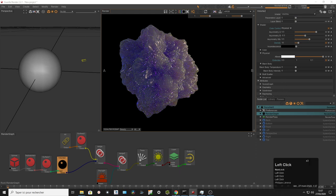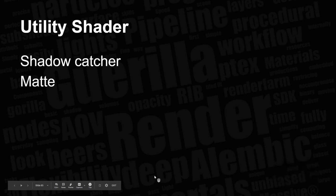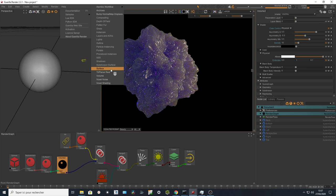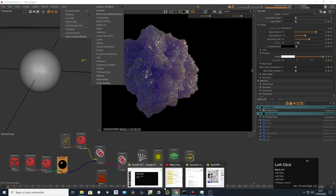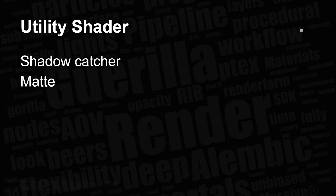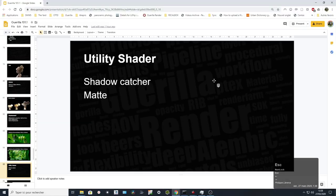There are also utility shaders. There's a shadow catcher for VFX work — if you need to catch shadows there's a sample directly in the samples folder you can look at. There's a matte shader useful if you want something with black light or a pure color, but we're not rendering ID passes because there's something more interesting: exporting ID cache directly into the EXR file, which I'll cover in the rendering part.